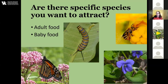Other examples are the squash bees. Squash, pumpkins, and gourds — their ancestors are native to North America, and so we have their native pollinator, the squash bee. The only thing that baby squash bee larvae eat is squash pollen or pollen from that cucurbit family. So if you want specific species, make sure you're providing for all life stages.